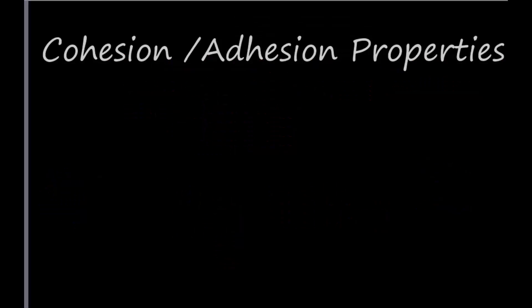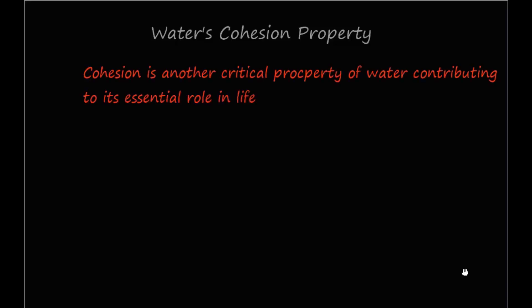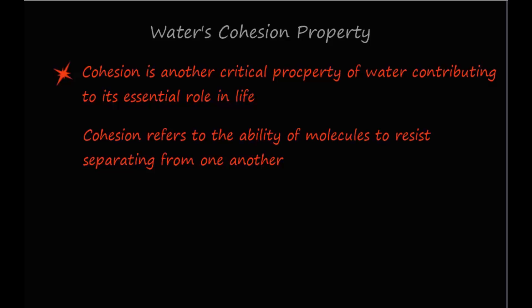This next property of water involves two effects referred to as water's cohesion and adhesion properties. These properties contribute to the uniqueness of water in biology. While these properties are somewhat similar, they are also quite different from one another. Cohesion refers to the ability of molecules to resist separating from one another. Examples include the water of a river or lake parting as a water skier carves a path behind a speedboat.